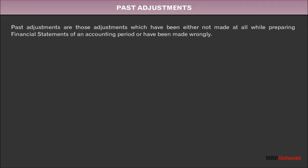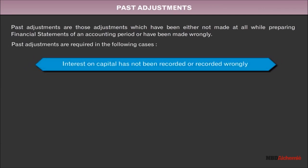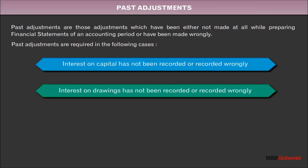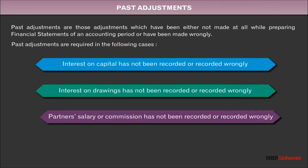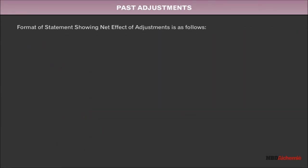Past adjustments are those adjustments which have been either not made at all while preparing financial statements of an accounting period, or have been made wrongly. Past adjustments are required in the following cases: interest on capital has not been recorded or recorded wrongly; interest on drawings has not been recorded or recorded wrongly; partners' salary or commission has not been recorded or recorded wrongly; and profit or loss has not been appropriated as per the partnership agreement. The format of the statement showing the net effect of adjustments is as follows.